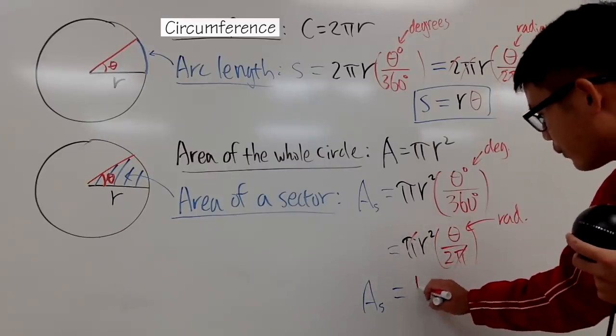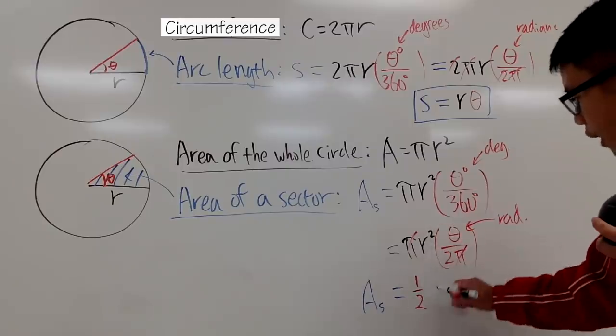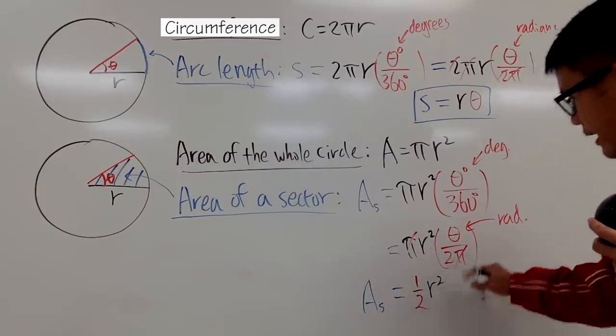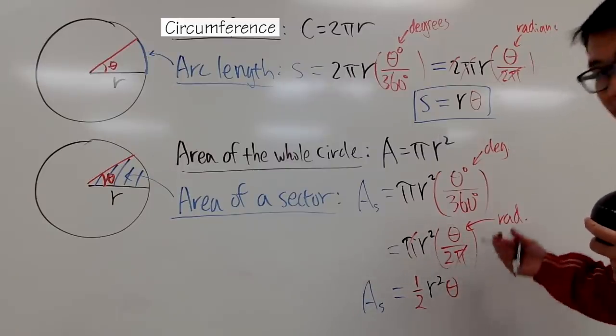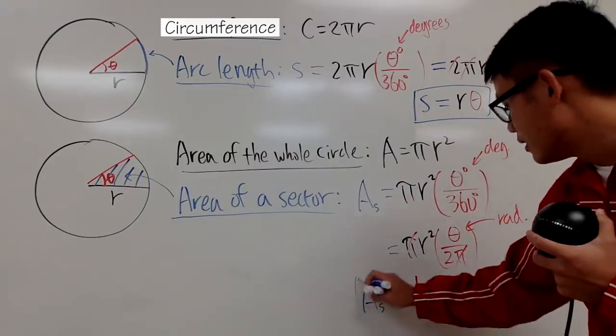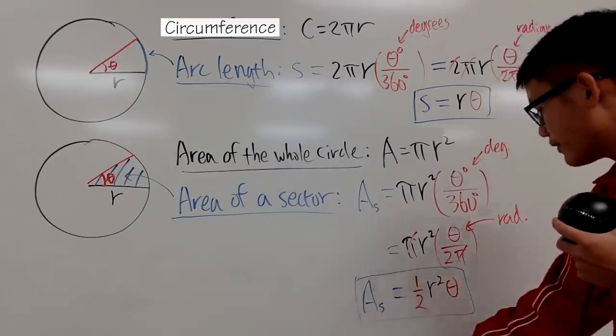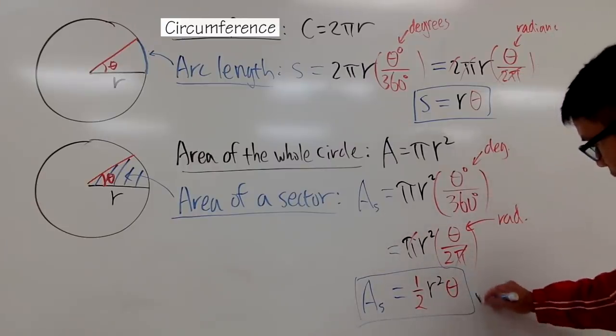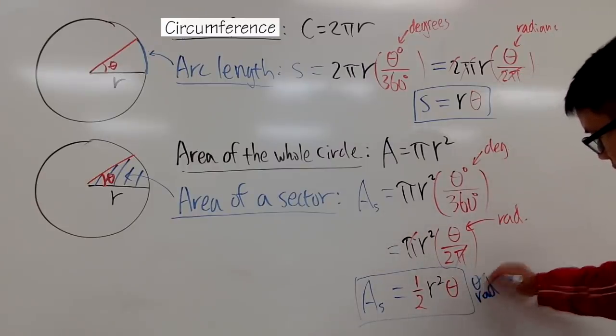And then, we have the r². And then, we have the angle θ, like that. So, this is the formula for the area of the sector when you have θ in radians.